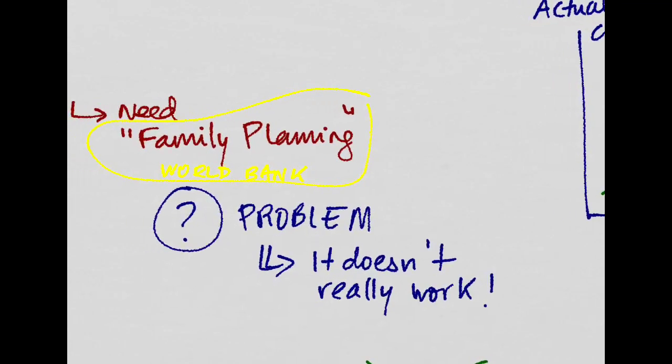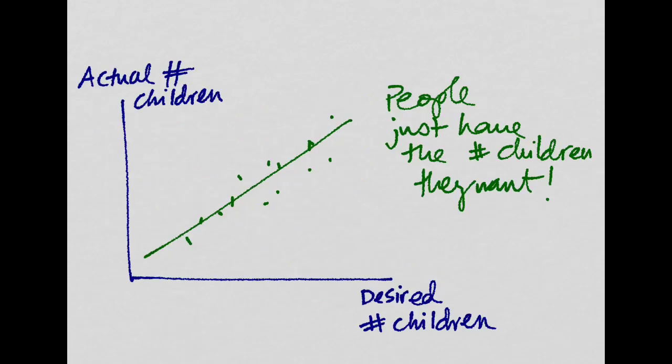Now, the problem with the solution we saw before to the Malthusian problem is that family planning does not work. Why doesn't it really work? Because, as it turns out empirically, people just have the number of children they really want, regardless of the country.